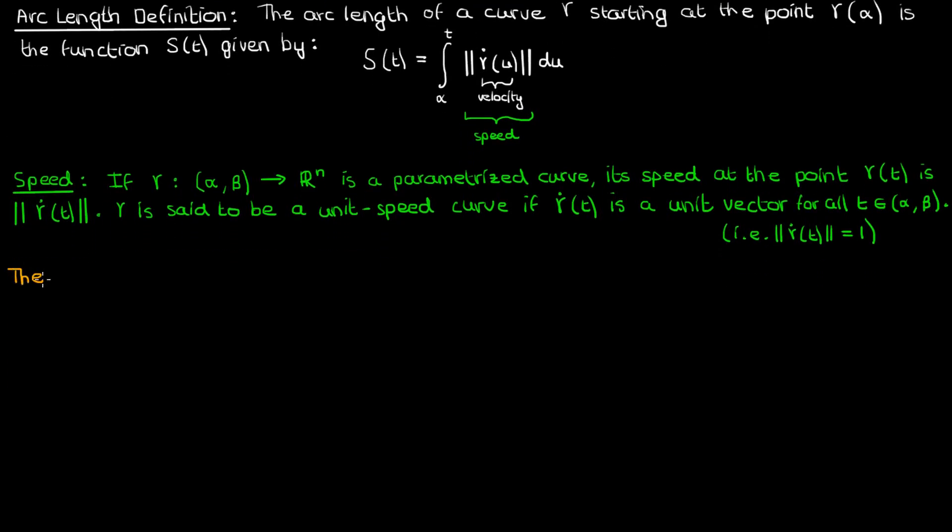Here's a quick and easy theorem related to speed that we'll now prove. Suppose I have a smooth unit speed curve given by γ(t), so a unit speed curve that is infinitely differentiable. If that's the case, the dot product of γ̇ and γ̈ is 0.